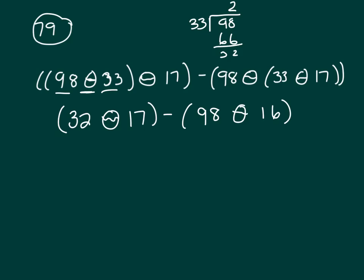Now, 32 divided by 17, once again, 17 times two would be 34, so it won't go two times, but it's two shy, my remainder would be 15.